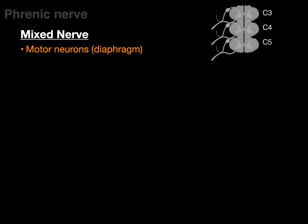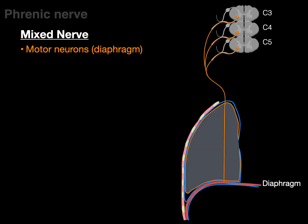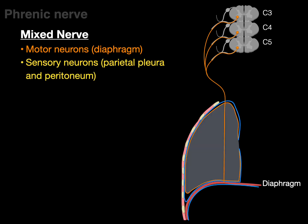The phrenic is a mixed nerve, which means it has motor neurons that innervate the skeletal diaphragm muscle. The lower motor neuron cell bodies arise in the ventral horn gray matter of C3, C4, and C5 and descend to innervate the diaphragm. The sensory neurons come from the parietal pleura and parietal peritoneum and ascend to the same C3, C4, C5 spinal cord levels. Motor neurons are in the ventral root, sensory neurons are in the dorsal root, but they're all part of the same ventral rami joining to become the phrenic nerve.